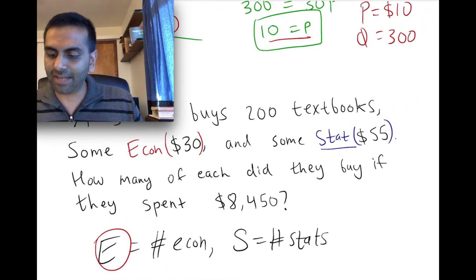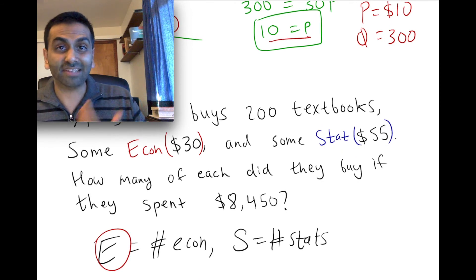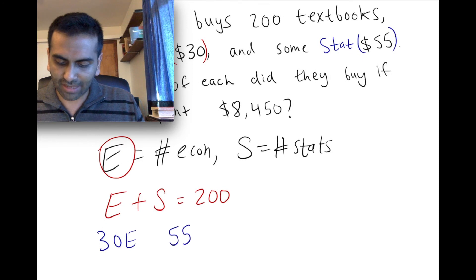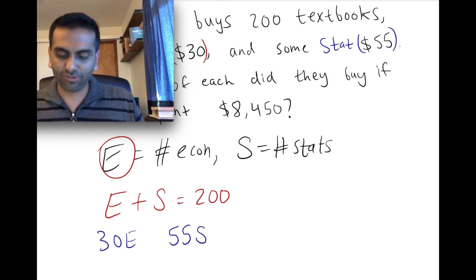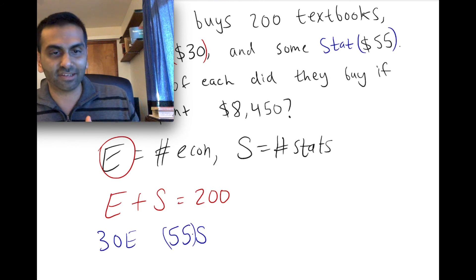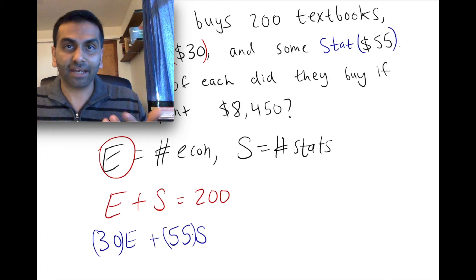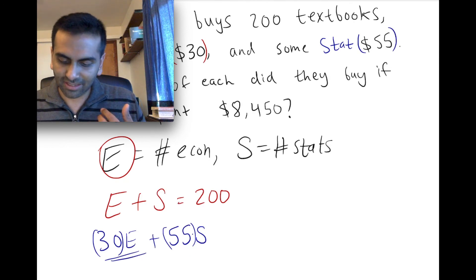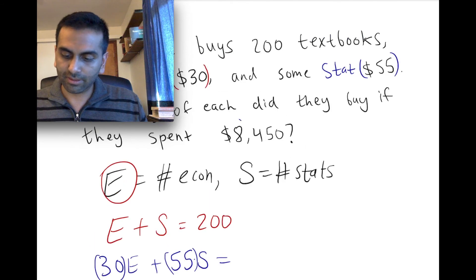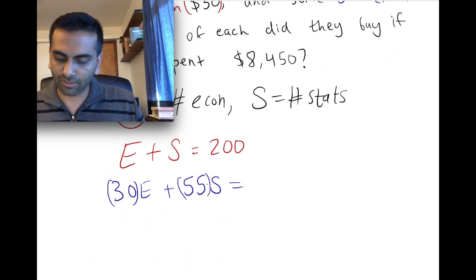How many dollars did I spend on stats textbooks? 55 each times S of them. So 55 times S, an unfortunate choosing of the letter S. It kind of looks like 5, but bear with me. So 55 times S, that's how many dollars you spent on stats textbooks. So 30 times E plus 55 times S, if you add them, that's how much money you spent in total on both textbooks. That's how much money on econ plus money on stats equals the $8,450 that you spent in total.